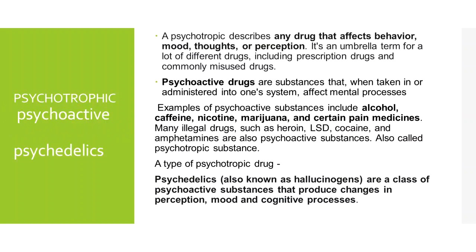We also have glutamate and GABA, or gamma-aminobutyric acid. A psychotropic drug describes any drug that affects behavior, mood, thoughts, or perception — it is an umbrella term for different types of drugs consisting of both prescription drugs and commonly misused drugs. Psychoactive drugs are substances that when taken into one's system can affect mental processes. Examples include alcohol, caffeine, nicotine, marijuana, and certain pain medicines. Psychedelics are also known as hallucinogens.